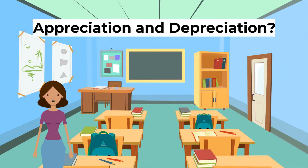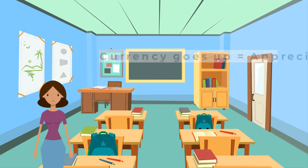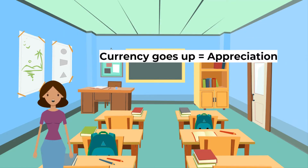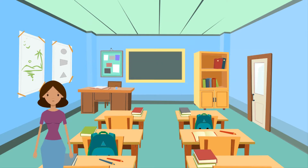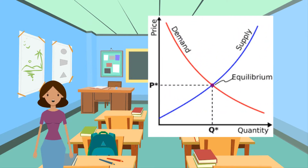How do appreciation and depreciation work? The exchange rate for any currency usually fluctuates. When the value of the currency goes up compared to other currencies, it is known as appreciation. When the value of the currency falls compared to other currencies, it is known as depreciation. Usually, exchange rates are determined by the demand and supply of that currency in the international market.